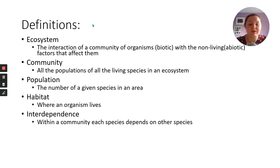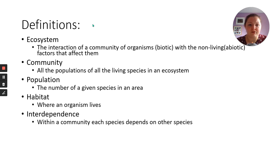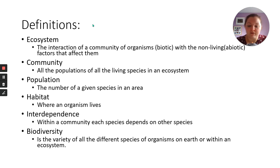Interdependence is one species depending on another. A lot of species rely on trees for shelter or food; some rely on others for food; some rely on others to keep other predators away. Biodiversity is the variety of all the different species of organisms on Earth or within an ecosystem. High biodiversity is good — means there's lots of different habitats for lots of different creatures. Low biodiversity is bad because then you're limited in what can survive there.